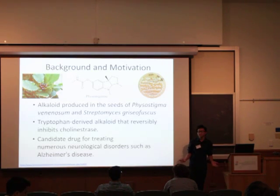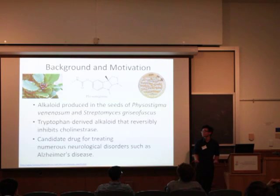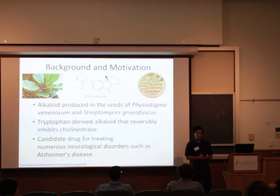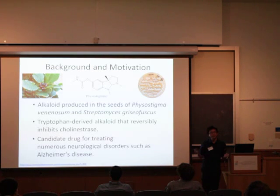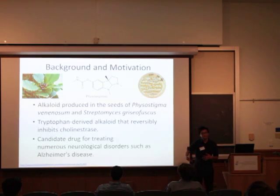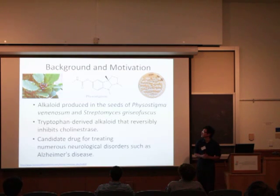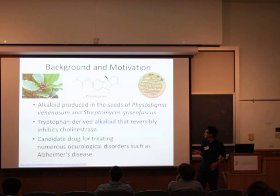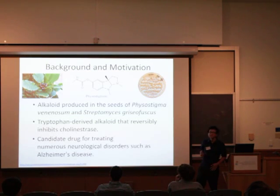Recently it has been shown to be produced in Streptomyces sp., which is a bacterium. That's very fortunate for us because bacteria offer a good platform to study the biosynthesis of secondary metabolites. Number one, they are a lot easier to manipulate genetically, and number two, they are a lot faster growing than plants. Physostigmine is a pyrroloindoline-derived alkaloid that inhibits cholinesterase.